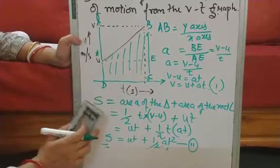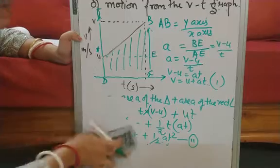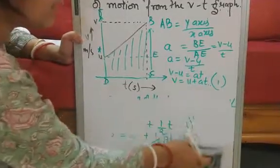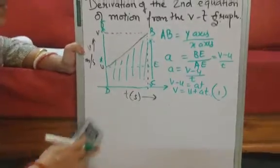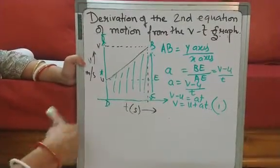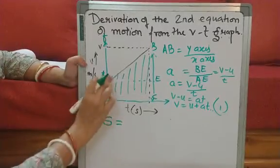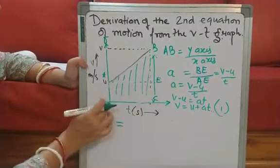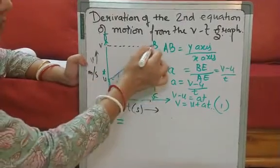Now, we go on to the third equation of motion. And again, this I am going to derive it from the same graph. So this graph is very, very important. Because from here, you can derive all the three equations of motion. Now, once again, displacement, as we have said, is the area of this figure. And if you see this figure, it is actually a trapezium.